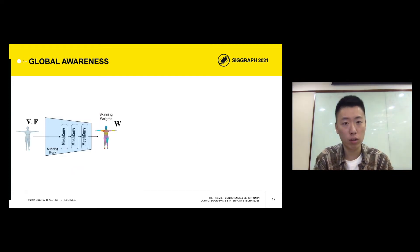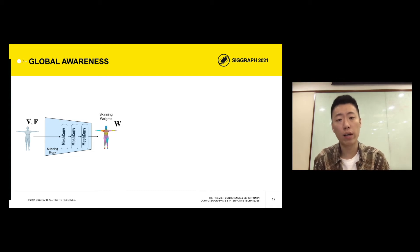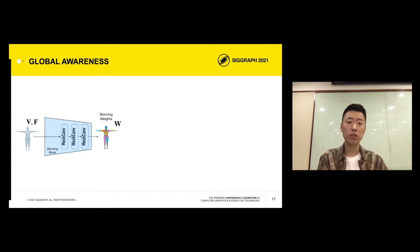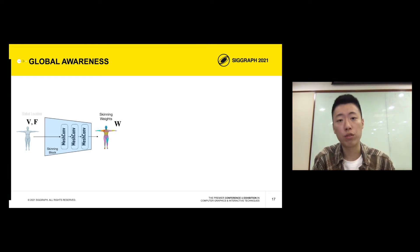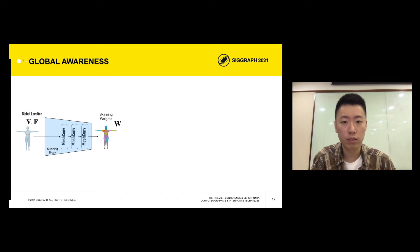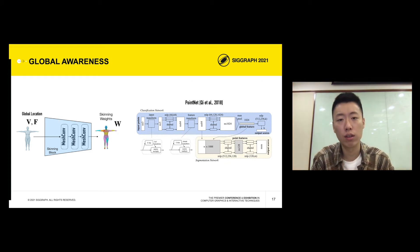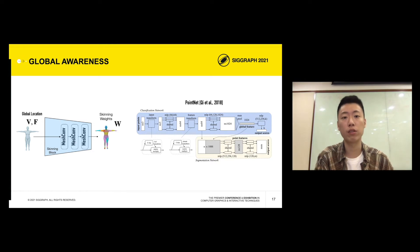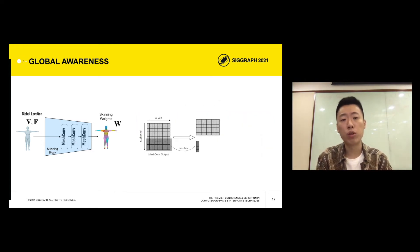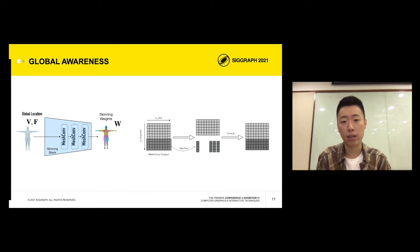Let's take a closer look at the skinning block. It takes vertex location as input and predicts the skinning weights. Predicting skinning weights requires global awareness, and we provide the network with global awareness in two ways. The first is trivial: we use global location as input for the network. Although convolution only provides local awareness, the input feature provides global awareness. The second is inspired by the segmentation network in PointNet, whose task is similar to the skinning block. They apply max pooling to the deep features and concatenate it with per-vertex features. Similarly, we apply max pool to one-fifth of the output channels along the vertex axis after each convolutional layer, then repeat and concatenate it back to the remaining features.